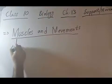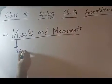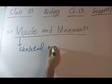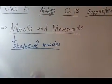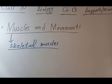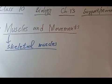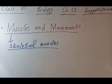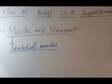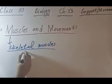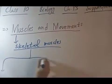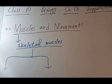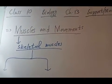The type of muscles which are present attached to the bones are called skeletal muscles. The muscles which are attached to the bones and which help the bones in movement are called skeletal muscles.